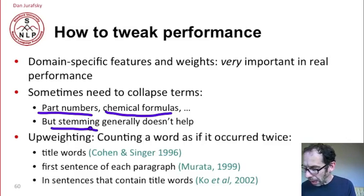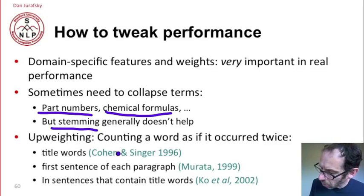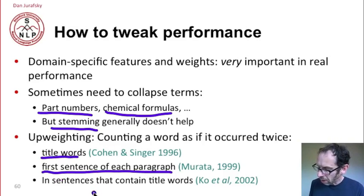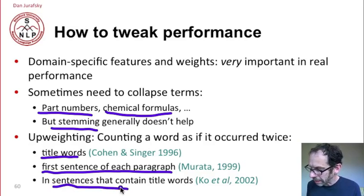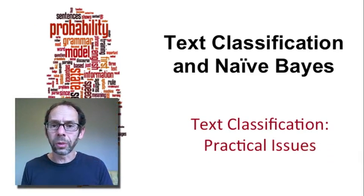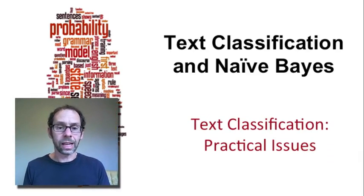It's also very important to upweight. Upweighting is counting a word as if it occurred twice. We often upweight title words, or the first sentence of each paragraph, or sentences that contain title words. Small ways that can help in tweaking performance. So we've seen a number of practical things we can do in building up a real world text classification system.